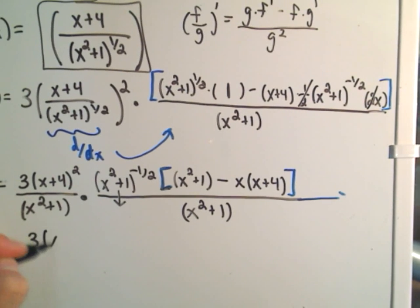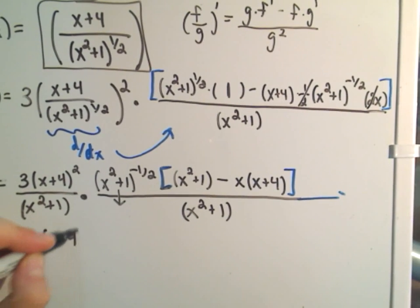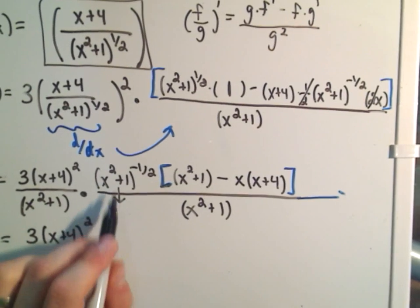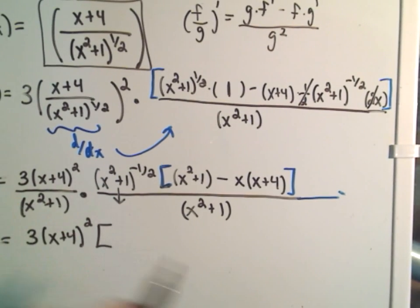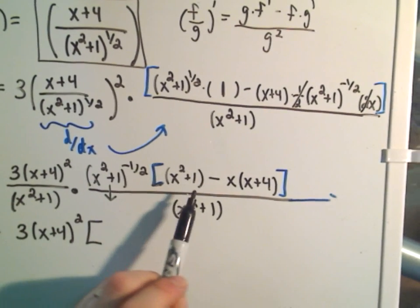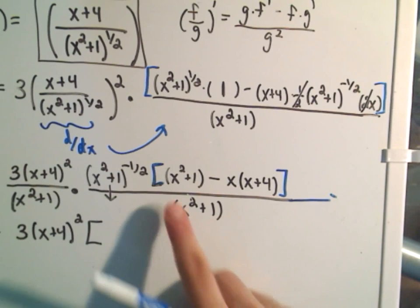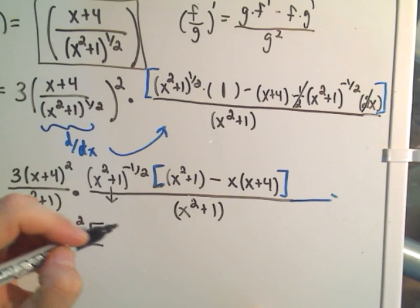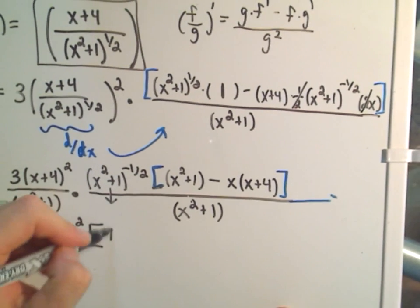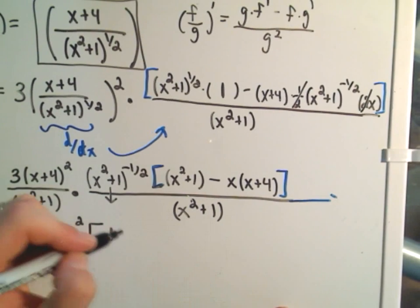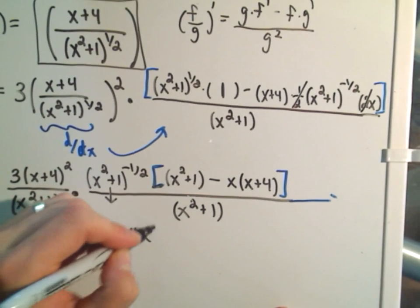And now we could move this negative exponent down because we have all multiplication in the numerator. So if I make this one big fraction, I'll have three times x plus four squared. I'm going to pull this part down. Inside the brackets, notice I'll have x squared minus x squared so they'll cancel out. I'll be left with a positive one. It looks like minus four x in the numerator.